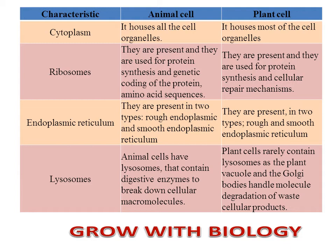Cytoplasm, ribosomes, endoplasmic reticulum, and lysosomes — we are talking about these four organelles. Cytoplasm is present in both plant and animal cells. Ribosomes are also present in both because both need to do protein synthesis. Endoplasmic reticulum is generally of two types: smooth endoplasmic reticulum and rough endoplasmic reticulum, and both are present in animal and plant cells. Lysosomes in animal cells contain digestive enzymes, and in plant cells, plant vacuoles and Golgi bodies serve wherever degradation of waste cellular products is required.